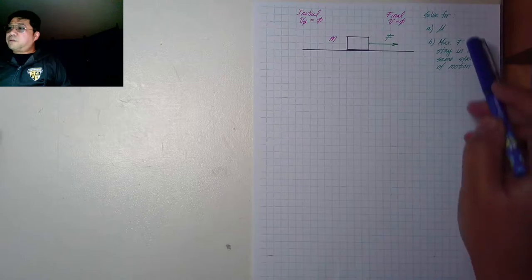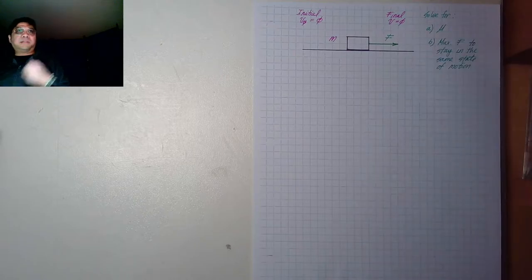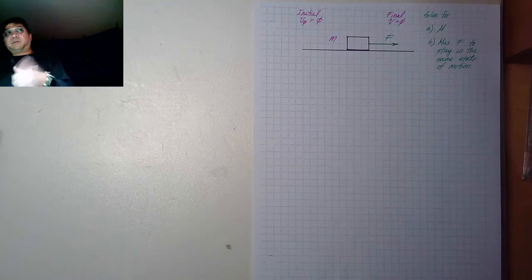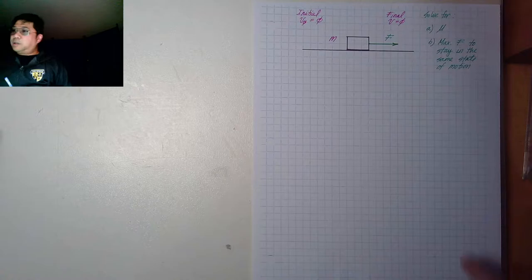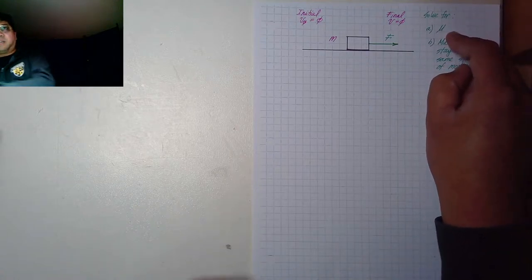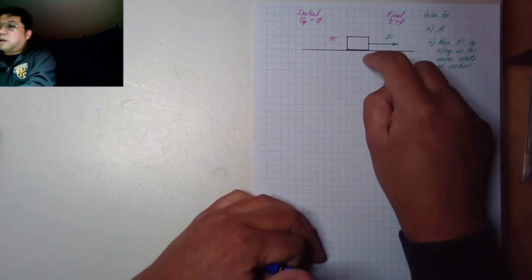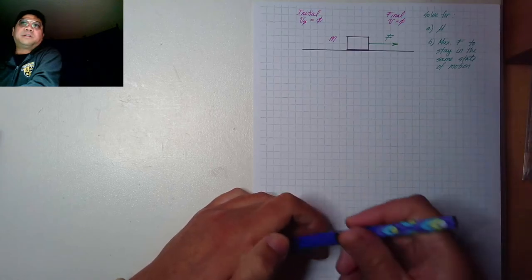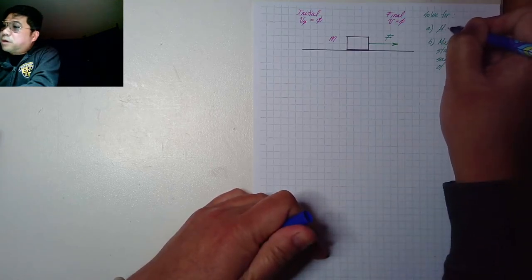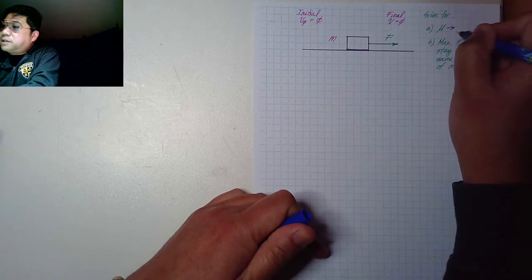The maximum amount of force required to keep the block at the same state of motion — in this first question we have mu, the coefficient of friction. Since the block is not moving, friction does exist, but it should be the coefficient of static friction. So therefore we are solving for the coefficient of static friction, mu-s.